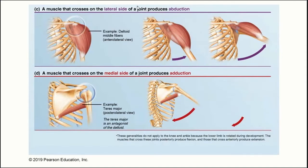Muscles that cross the lateral side of a joint will typically produce abduction — moving the limbs away from the midline in a coronal plane. Muscles that cross the medial side of a joint produce adduction — moving that structure back towards the midline in a coronal plane.